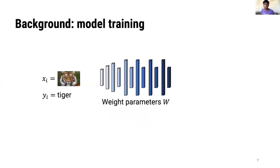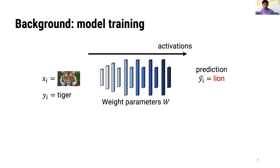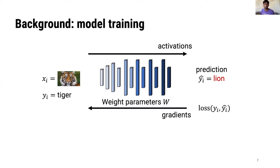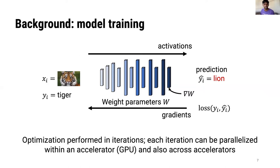Training a deep neural network model at a high level involves finding weight parameters W that fit a training dataset consisting of inputs and often associated labels. A forward pass through the model generates intermediate activations as well as a prediction. This prediction could be incorrect in some cases — for example, we could think that this picture of a tiger is in fact a lion. Errors between the predictions and the true labels are then back propagated through the model in a backward pass, generating weight gradients that can then be used to update the model's parameters. Typically, this process occurs for batches of inputs. The backward pass is stateful and uses both the weight parameters and intermediate activations as input in order to compute these weight gradients. Optimization is performed in iterations and each iteration can be parallelized within an accelerator such as a GPU and also across accelerators.